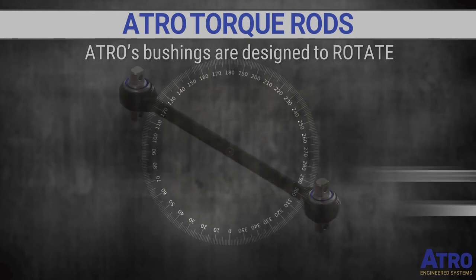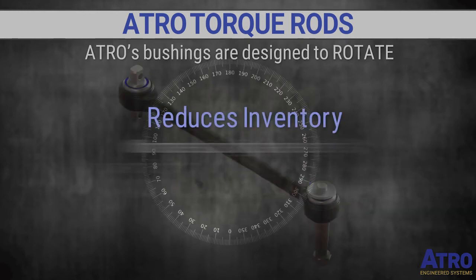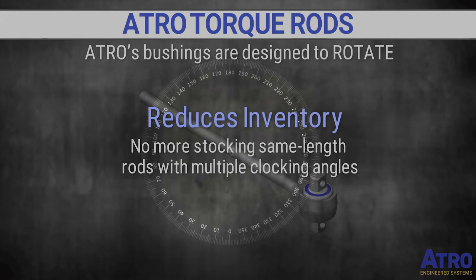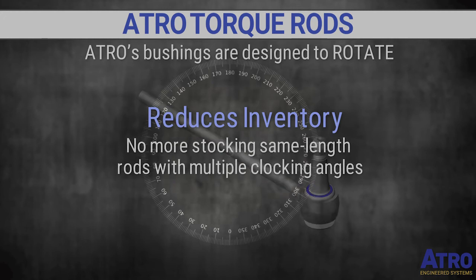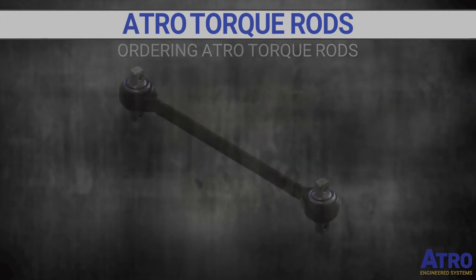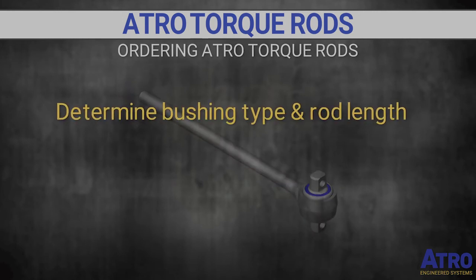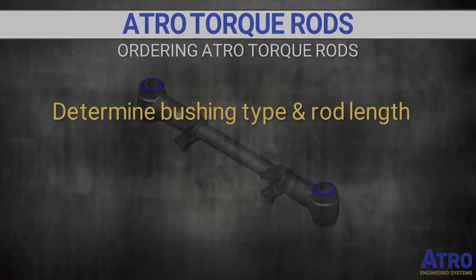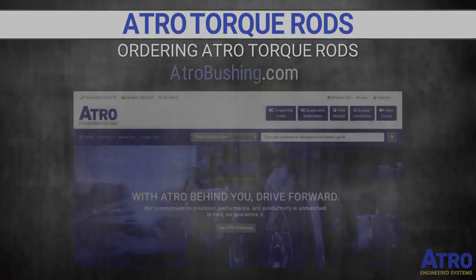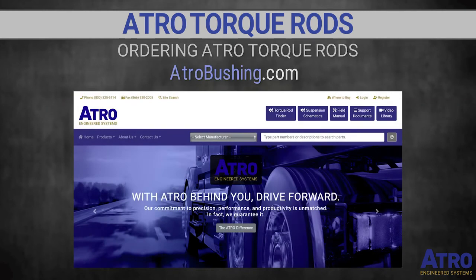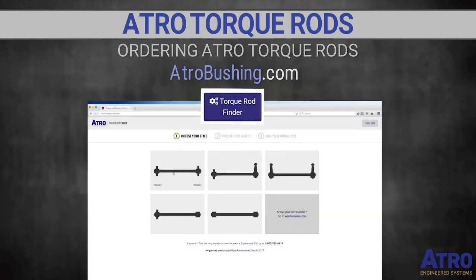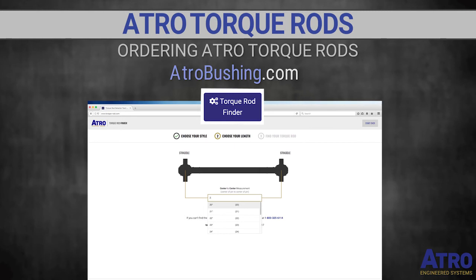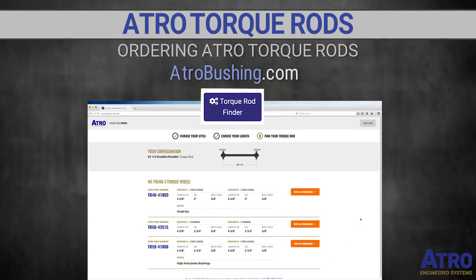Atro's rotating bushing design also allows you to reduce inventory because it won't be necessary to stock same-length rods with different degree clocking. Ordering Atro torque rods is fast and easy — once you have determined the bushing type and rod length, simply visit atrobushing.com, click on torque rod finder, and enter your information.